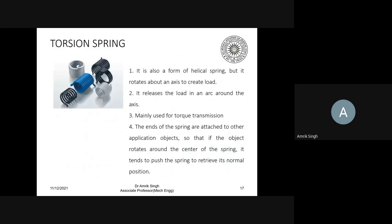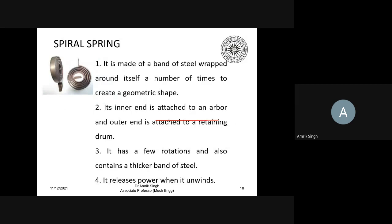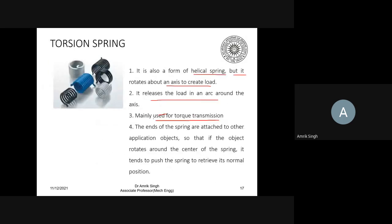The torsion spring is also a form of helical spring, but it rotates about the axis to create the load. It releases the load in an arc around the axis and is mainly used for the transmission of torque. The ends of the spring are attached to other application objects so that the object rotates around the center of the spring, and the spring tends to return to its normal position.